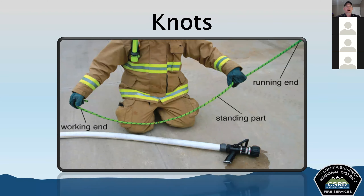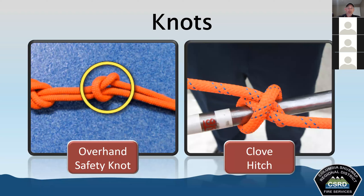Now let's talk about knots. We use them to join ropes and webbing together, for hauling tools, door control, and all different kinds of things. It's a critical part of firefighting and rescue operations. When discussing knots and the use of ropes, there are three different parts: the working end — the end of the rope used to tie the knot; the running part — the free end used for hoisting and pulling; and the standing part — the section between the working end and the running end.